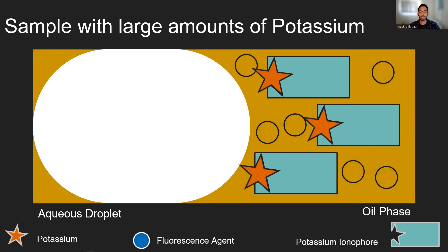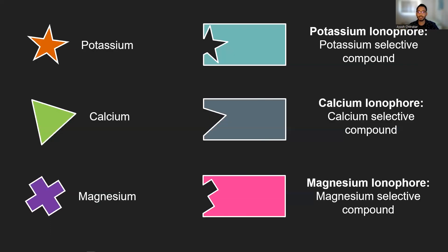So we can use this potassium selective oil to detect potassium. But how do we change the system to be able to detect other electrolytes such as calcium or magnesium? We can simply change the ionophore that we're using. This is the chemical that can selectively bind to whatever electrolyte that we want. So in this case, we can use the calcium ionophore to measure calcium and a magnesium ionophore to measure magnesium.